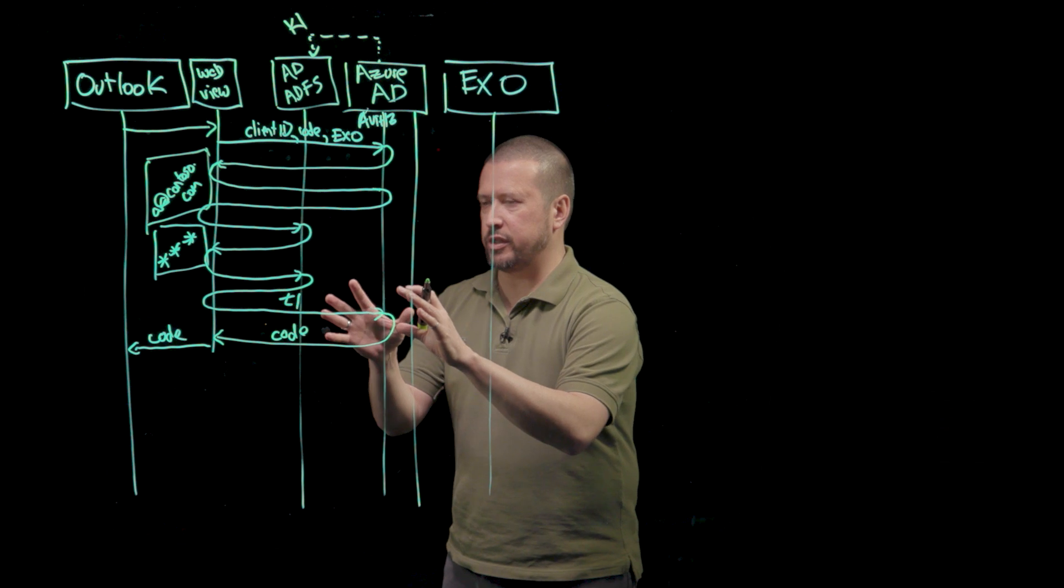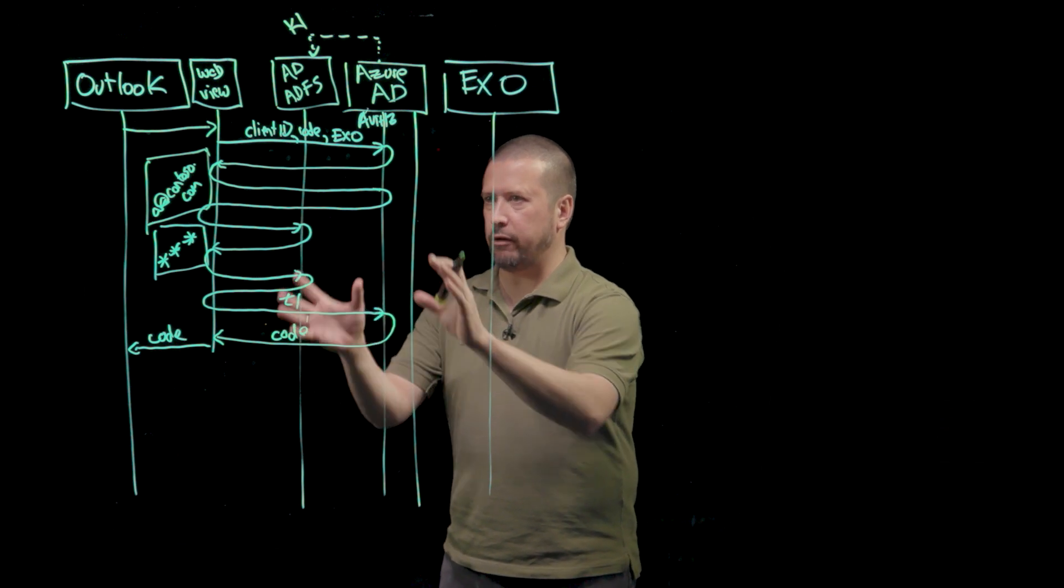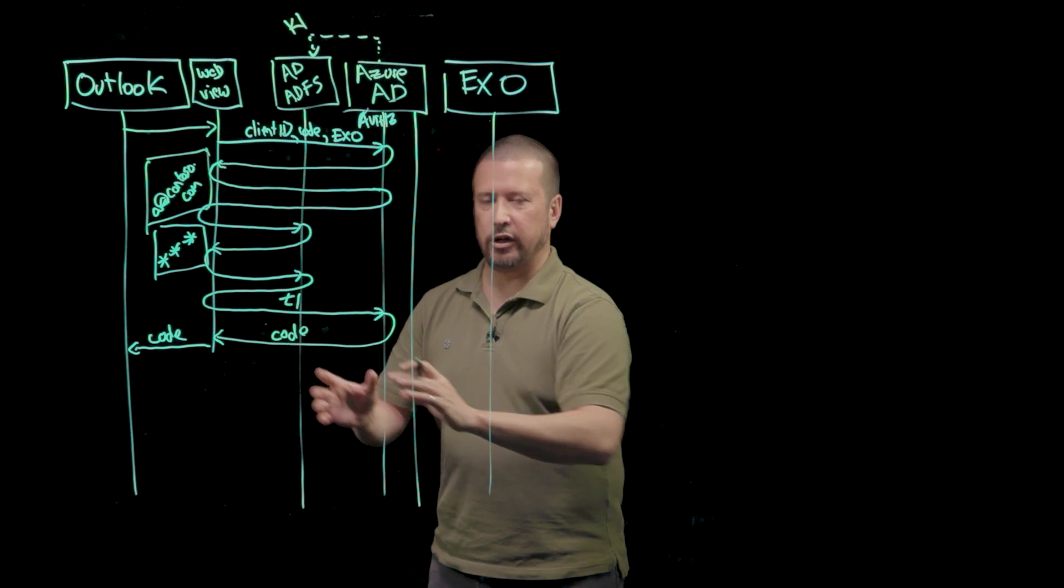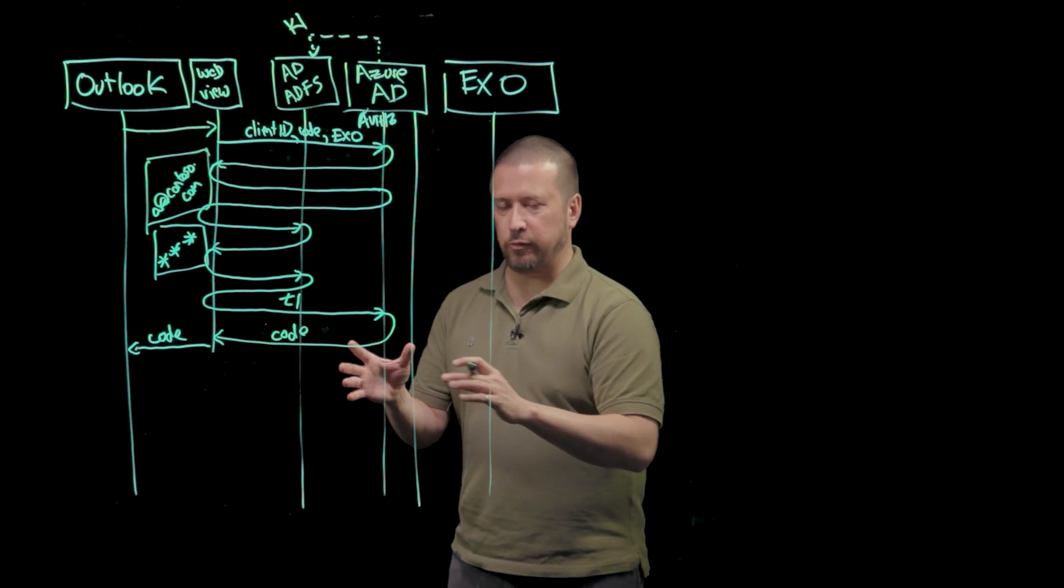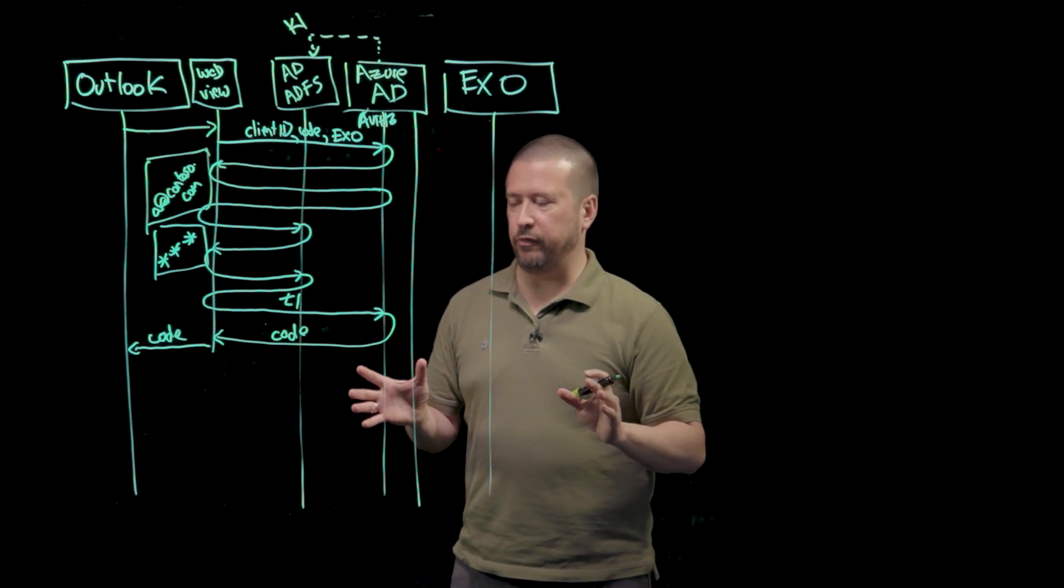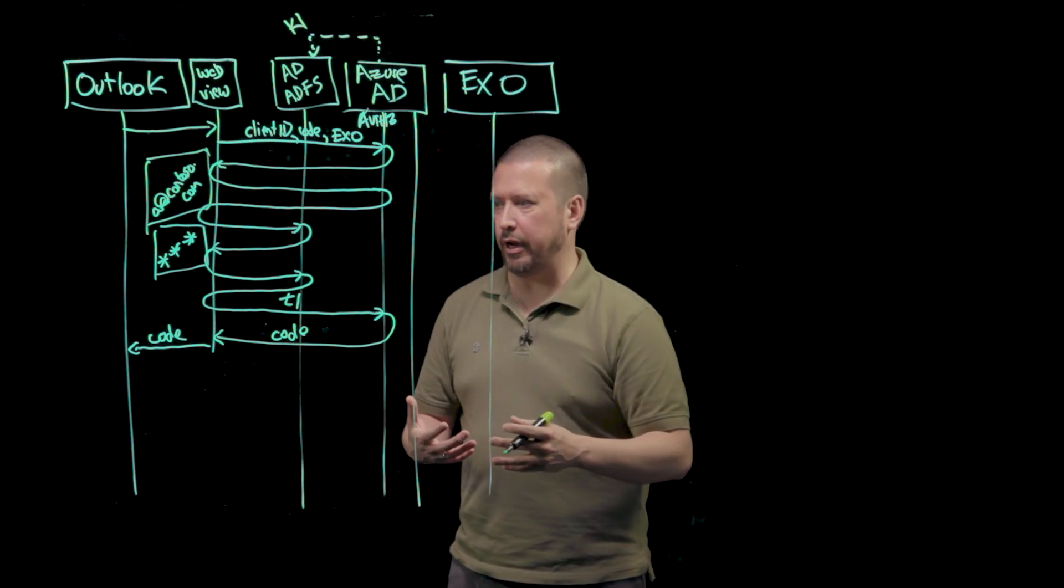In the previous section, in part one, we looked at the interactive portion of the sign-in where Outlook obtained an authorization code. Let's look at what happens now as Outlook performs the non-interactive part of the flow to finally get a token and then to do things over time.